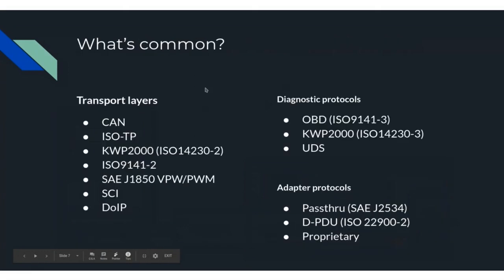There are various standard transport protocols such as CAN, ISOTP, Keyword Protocol 2000, and ISO 9141-2. There are various diagnostic protocols for doing diagnostic procedures with the ECU — OBD, which is a legal requirement on all vehicles since around 2000 in Europe; Keyword Protocol 2000, which is being superseded by UDS (Unified Diagnostic Services). There are also adapter protocols such as pass-through or SAE J2534, the newer DPDU API, and various miscellaneous proprietary protocols for various adapters.